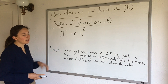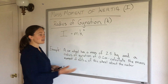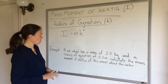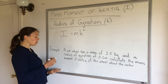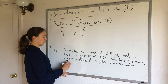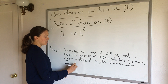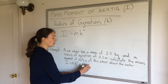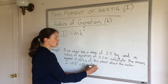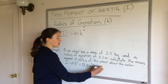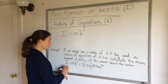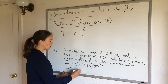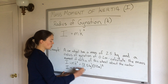Here's a good example: a car wheel with a mass of 2.5 kilograms and a radius of gyration of 0.2 meters. We need to calculate the mass moment of inertia of this wheel. Using the equation I = mk², the mass is 2.5 kilograms, the radius of gyration is 0.2 meters, and that gets squared. So our mass moment of inertia is 0.1 kilogram·meters squared.